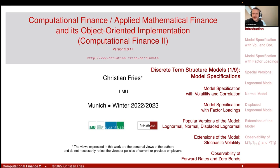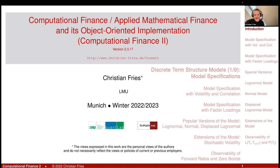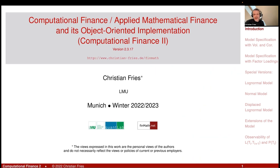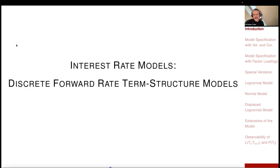Welcome to Applied Mathematical Finance. We now begin a new section — a big one. This is the discrete forward rate term structure models, also historically known as the LIBOR market model, though that name is no longer so precise, since there is no longer a LIBOR rate in the market.